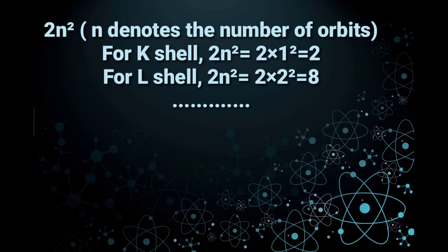Similarly, the number of electrons in L shell, i.e., second orbit, equals 2×2², which is 8. Thus, the maximum number of electrons in second orbit is 8.